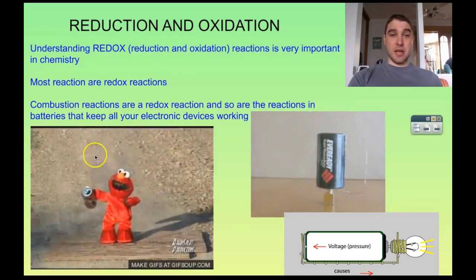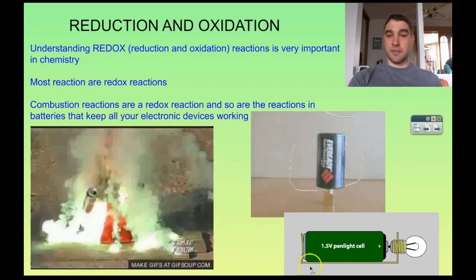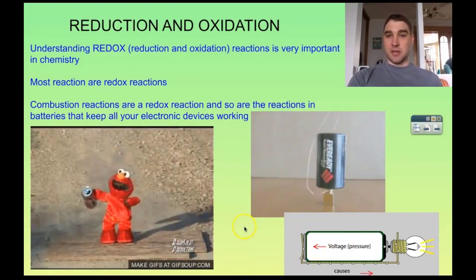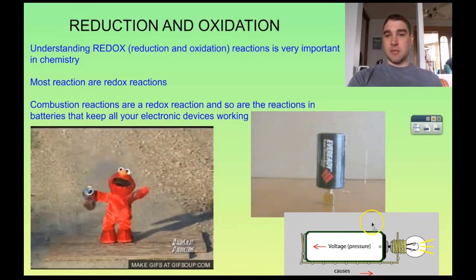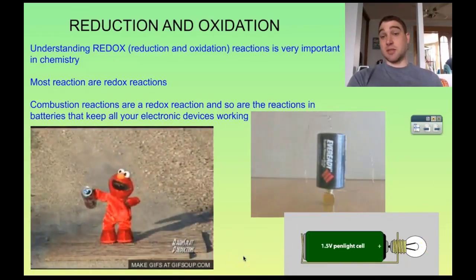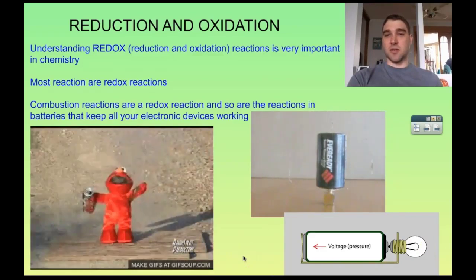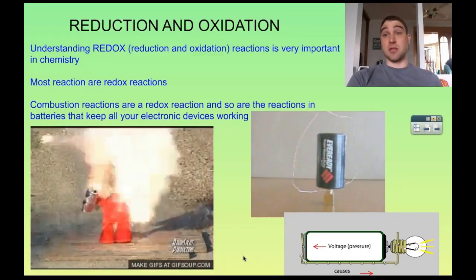So examples down here, we have Elmo combusting, so combustion reactions. They're redox reactions. Here we have a battery running a very easy small motor. All the chemistry involved in batteries is redox chemistry. So it's redox reactions going on involved in batteries that cause batteries to do what they do.